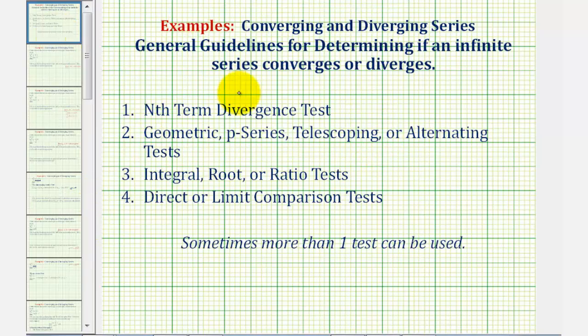Looking at our options to determine convergence or divergence, notice that none of the options from number two stand out. The given series is not geometric, it's not a p-series, and it's also not telescoping or alternating, which leads us to option three or option four.